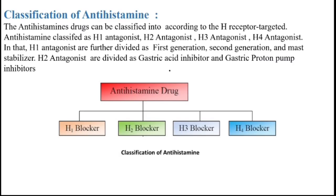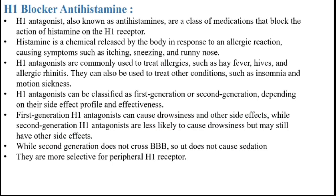Classification of antihistamine. Antihistamine drugs are basically classified into four types according to their receptor: H1 blocker, H2 blocker, H3 blocker, and H4 blocker. H1 antagonists, also known as antihistamines, are a class of medication that blocks the action of histamine on the H1 receptor. They are commonly used to treat allergies such as hay fever, hives, and allergic rhinitis. H1 antagonists can be classified as first generation or second generation depending on their side effect profile and effectiveness.